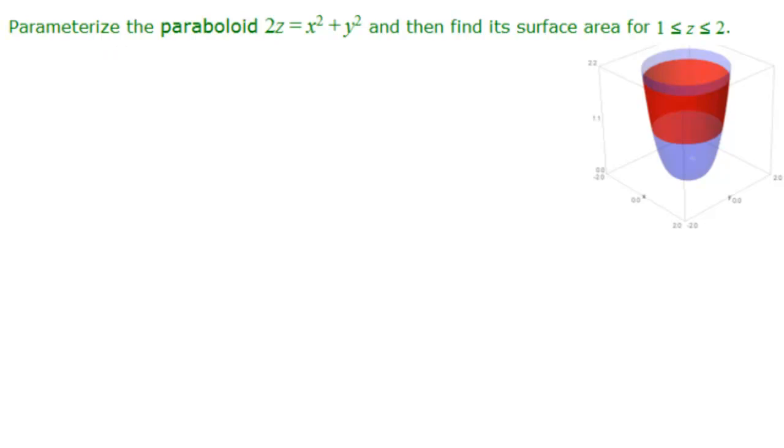Parameterizing a surface requires that we have two variables. Parameterizing a curve is one variable. Parameterizing a surface is two variables. And what we look for is key things in our function. And the key thing here is x squared plus y squared, which reminds us of a circle. So let's complete the circle, x squared plus y squared.